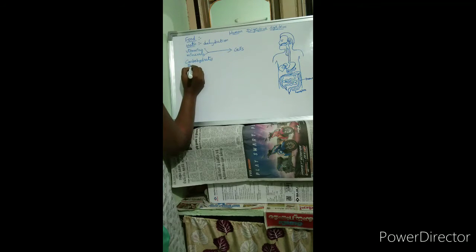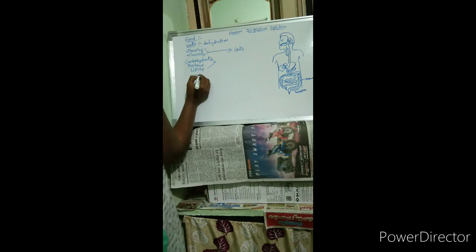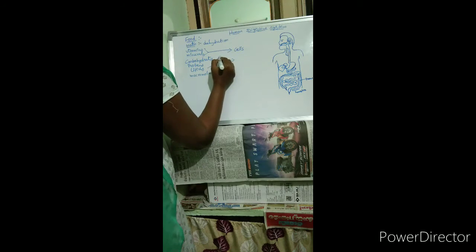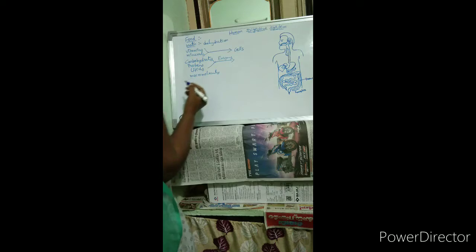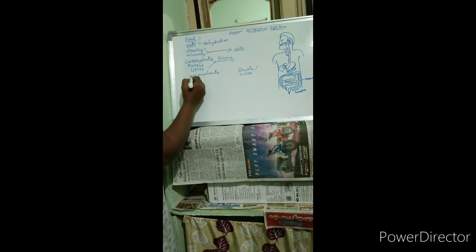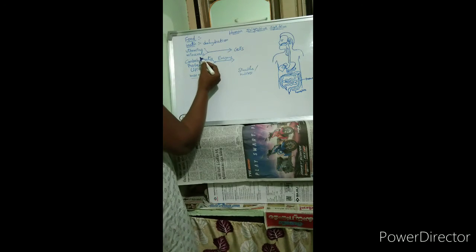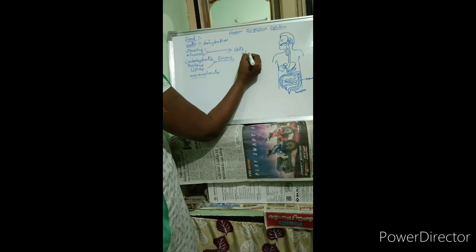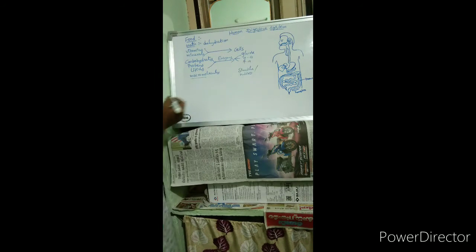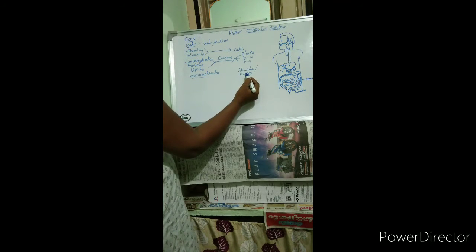Carbohydrates, proteins, and lipids are called macromolecules. These are not directly absorbed into the cells, so they are broken down with the help of enzymes and converted into simple absorbable forms called micromolecules. Carbohydrates are broken down into glucose, proteins into amino acids, and lipids into fatty acids or glycerol. These simple absorbable forms are then absorbed into the cells.